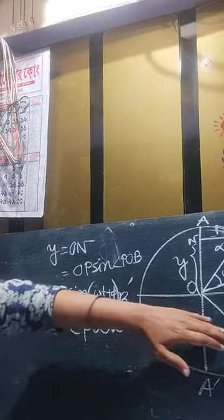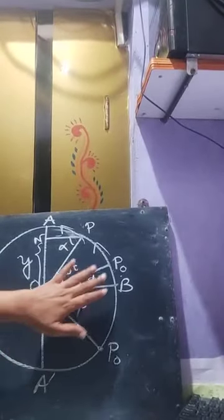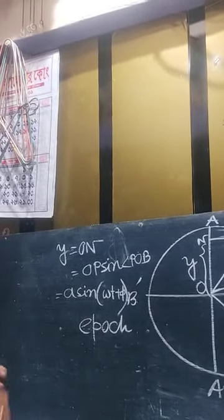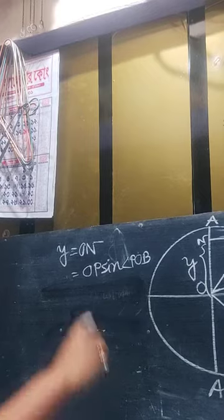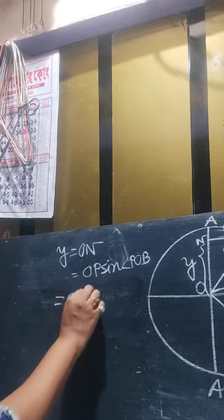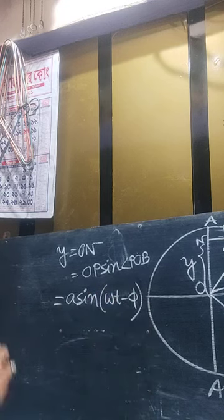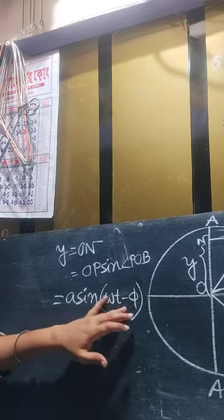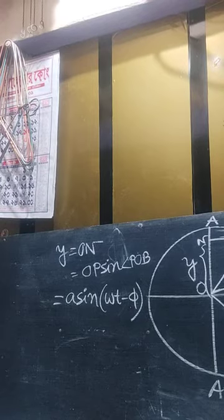For the second position, if P0 is on the other side, the equation becomes y equals A sin(omega t − phi), where minus phi is the epoch of N. When it is minus, we say they are in opposite phase. Today I am ending this video. In the next video I will continue with the velocity of SHM. Thank you.